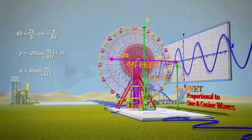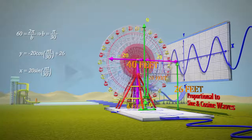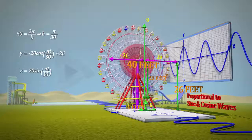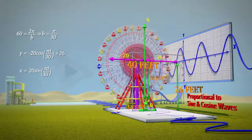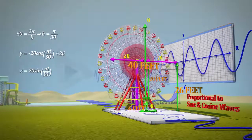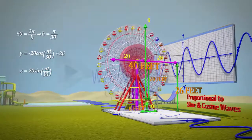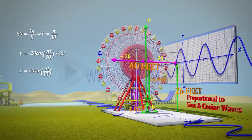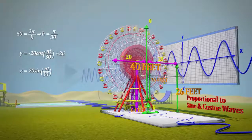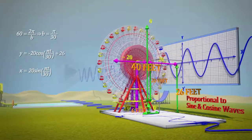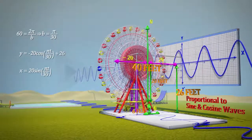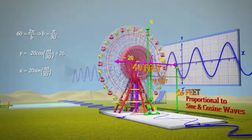Thus, the parametric equations for the point on the wheel are: x = 20·sin(πt/30) and y = −20·cos(πt/30) + 26. Now, to find the velocity of horizontal and vertical components, we need to differentiate the horizontal and vertical parameterizations, and this differentiation is called parametric differentiation.